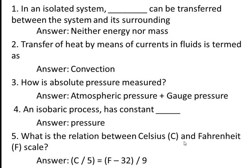Fifth question: what is the relation between the Celsius and Fahrenheit scales? These are the two scales used for temperature measurement. The relation is: C/5 = (F − 32)/9, where C is the Celsius scale and F is the Fahrenheit scale. If you have a degree Celsius value, you can put it in this formula to find the Fahrenheit value. At minus 40 degrees Celsius, both Fahrenheit and Celsius scales show the same reading.